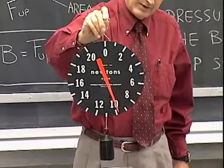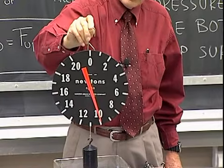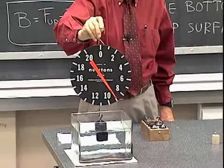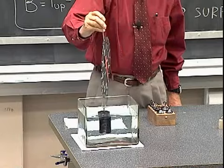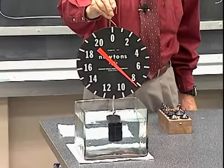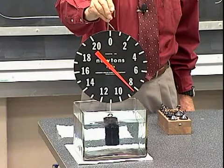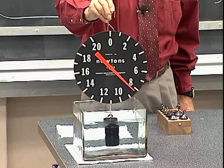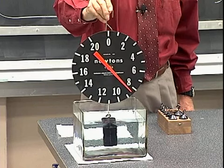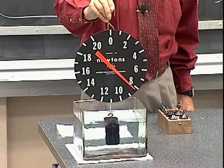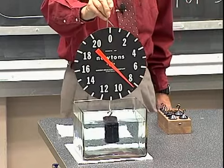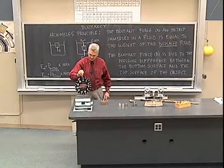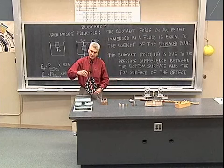Now when I put this 10 newton weight in this water, the pressure on the bottom will start to build up as it goes deeper and deeper until it's totally immersed. We find when it's totally immersed, the weight as measured by the spring scale — the upward force of the spring scale on the object — is now only about 8 newtons, illustrating a 2 newton force of buoyancy. And if we were to measure the volume of the water displaced and then weigh that volume of water, we would find that the displaced water would weigh approximately 2 newtons.